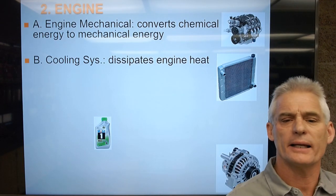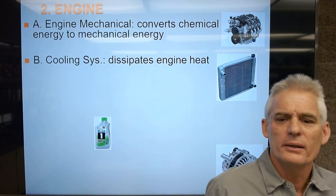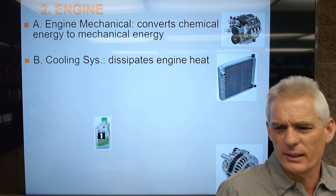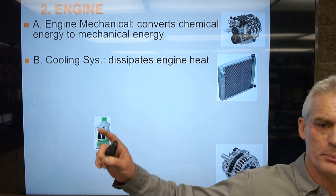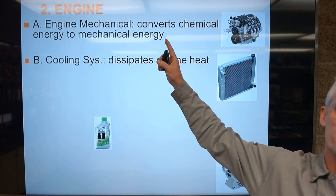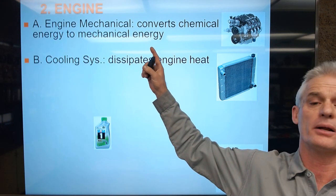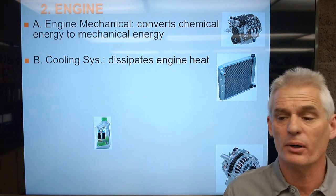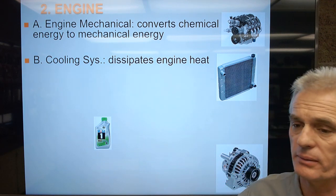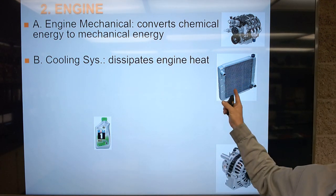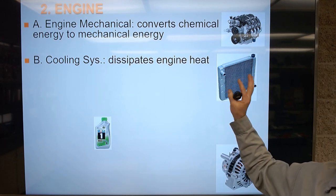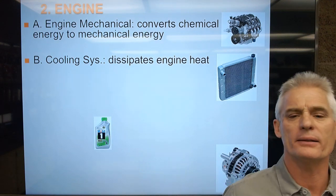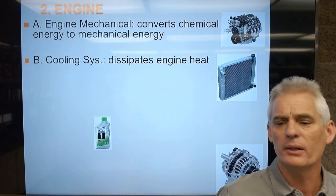The second subset under the engine is the cooling system, which dissipates engine heat. The heat comes from combustion — when we burn air and fuel, we make around 2,500 degrees Fahrenheit of heat, which can melt and damage engine parts if we don't cool it. Here's a radiator, which is a heat exchanger — liquid coolant goes through it, gets cooled, and gets pumped back to the engine to dissipate that combustion chamber energy.